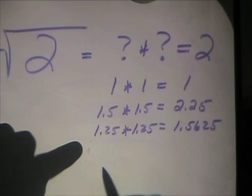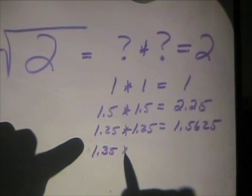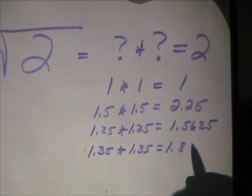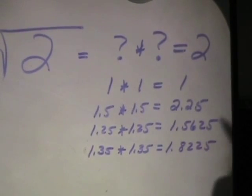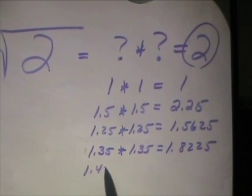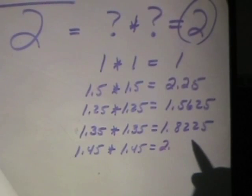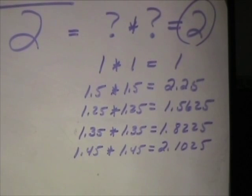Okay, Jesse? 1.35. Alright, let's try 1.35 times 1.35. 1.8225. Oh baby, we're getting close. We're going to have to try it bigger than 1.35. 1.45 squared. 2.1025. Smaller than this, but bigger than that.